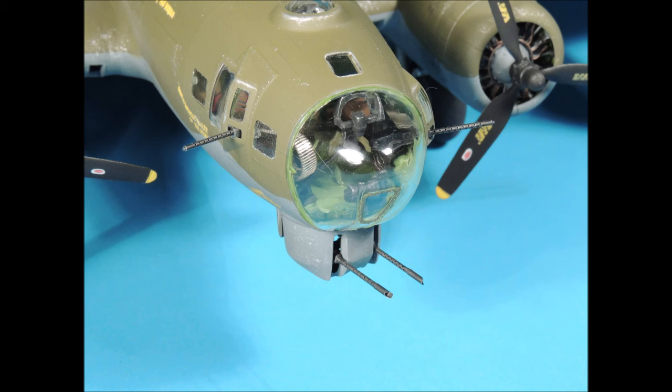This concludes part 7 of Detailing and Building the Revell Monogram 1:48 scale B-17G. Stay tuned for part 8 where we focus our attention on the cockpit and tail clear parts, detailing the hatches that we had cut out, and adding some interior details to the areas where the hatches will be open.